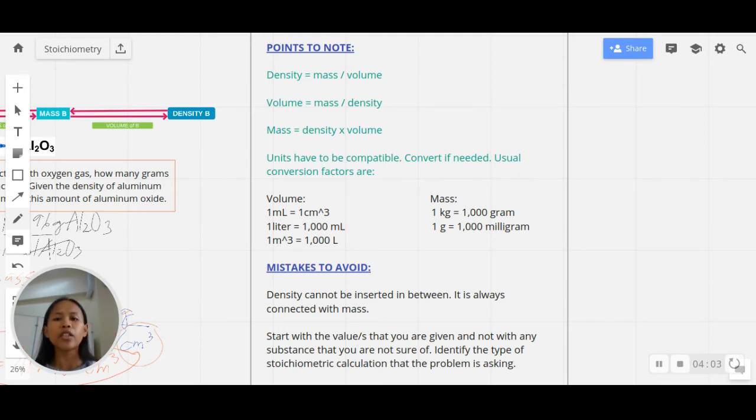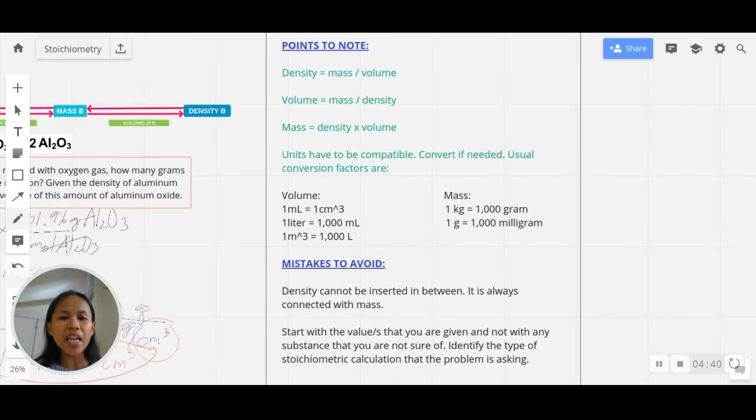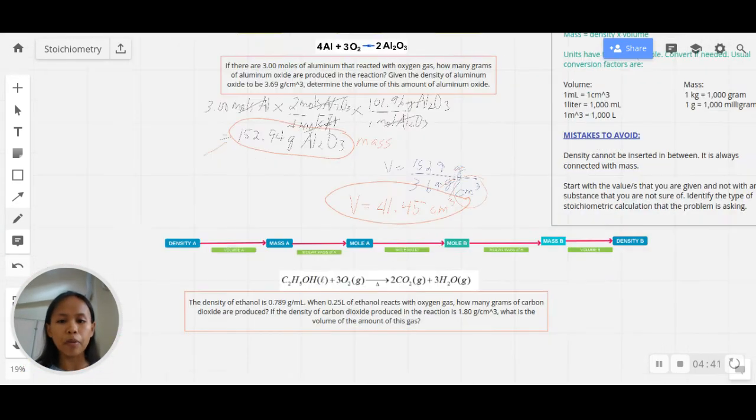If there's a density, that means you cannot do any density-related calculations if there is no mass. So it always involves any mass-related conversion factor. In that case, if there's mass, there's always the conversion factor of molar mass, which will come from your periodic table. The unit of molar mass is always the value in grams per one mole of that substance, and molar mass can never include the coefficients in calculating it.